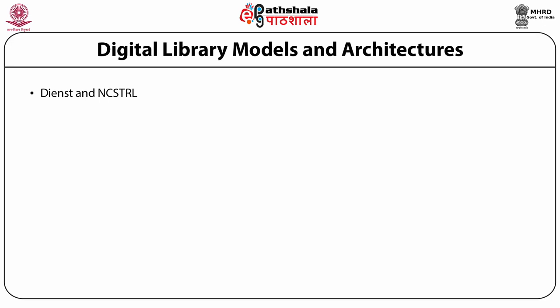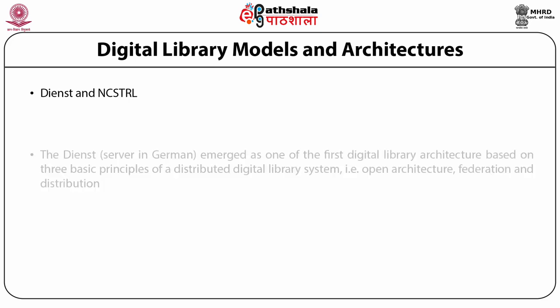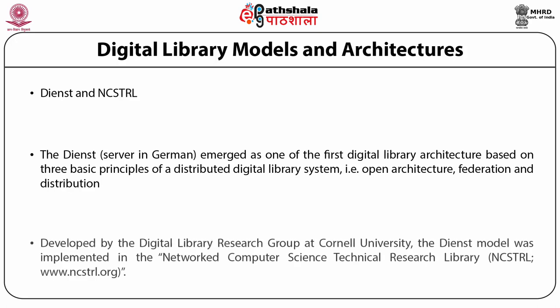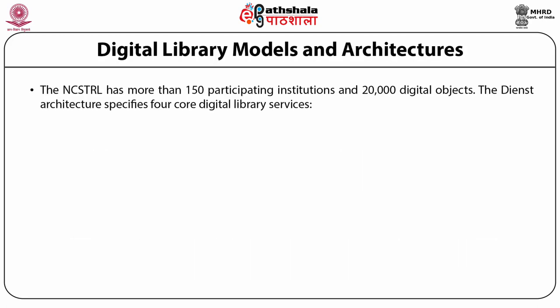In Danst and NCSTRL architecture — Danst is the server in German — Danst emerged as one of the first digital library architectures based on three basic principles of a distributed digital library system: open architecture, federation, and distribution. Developed by the digital library research group at Cornell University, the Danst model was implemented in the Network Computer Science Technical Research Library, that is NCSTRL, available at www.ncstrl.org. NCSTRL has more than 150 participating institutions and over 2,000 digital objects.